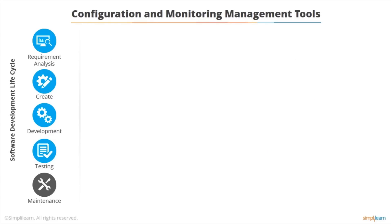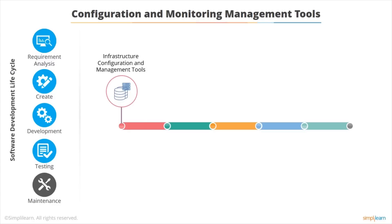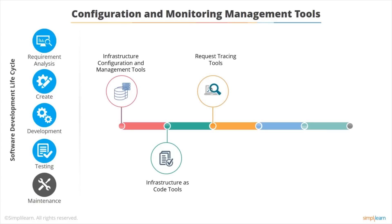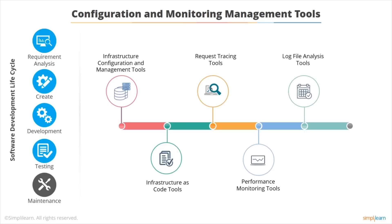Very important configuration and monitoring tools. Infrastructure configuration and management — we don't want to do it manually, we want it automated. We have the concept of infrastructure as code: basically scripting which controls the infrastructure. Request tracing tools find out exactly what happens when a request is made and whether it's been executed and put into production. Performance monitoring is vitally important to make sure our systems are doing what they're supposed to do in a timely fashion. Also log file analysis tools — many systems produce a lot of very verbose log files and we need to look for the interesting things, which are usually things going wrong. Then we need to be able to report issues as soon as we can detect them and have the processing mechanism in place to deal with them.